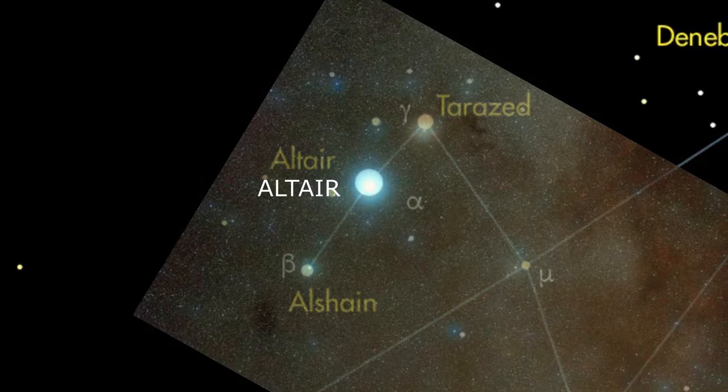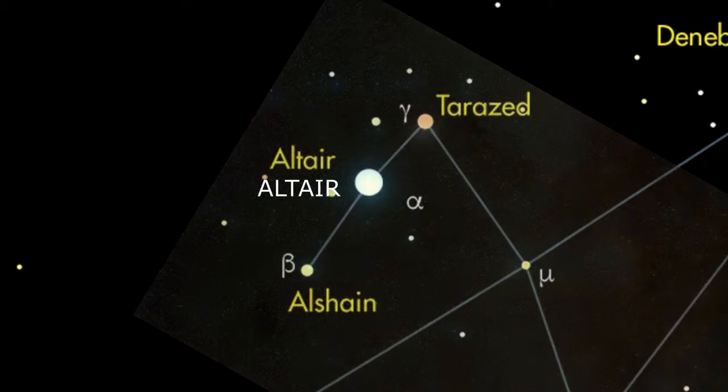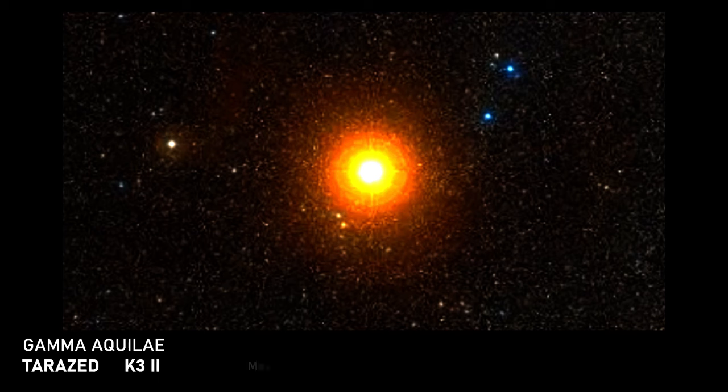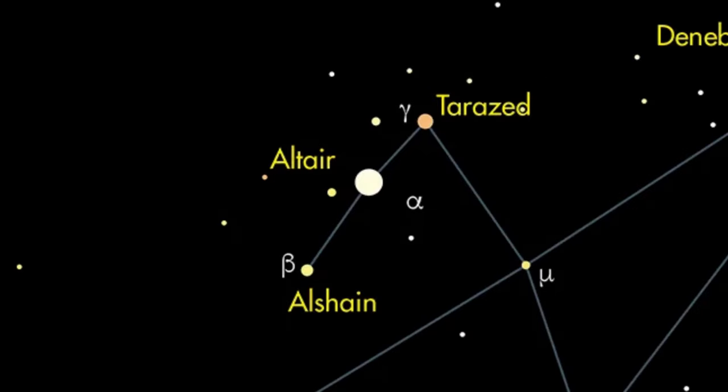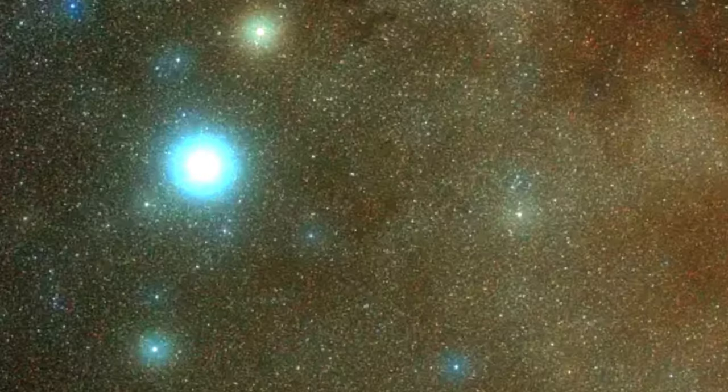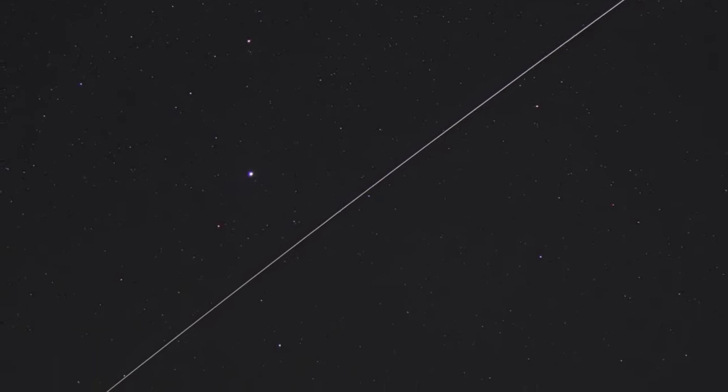Altair itself is distinctive because of two dimmer stars that appear to sit on either side of it. Second magnitude Tarazed, or Gamma Aquilae, to the north-northwest, and almost fourth magnitude Alshain, or Beta Aquilae, to the south-southeast. Blazing away at magnitude 0.8, Altair easily outshines both of them, as we see in this depiction. In this interesting photo, we see the ISS passing through the shaft with Aquila, Tarazed, and Alshain.